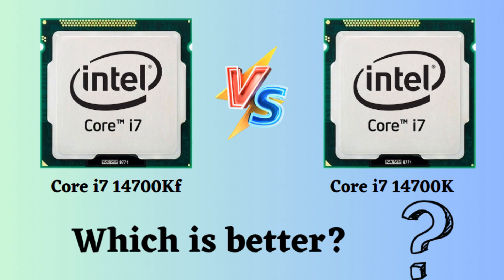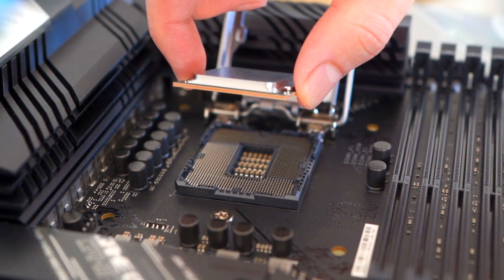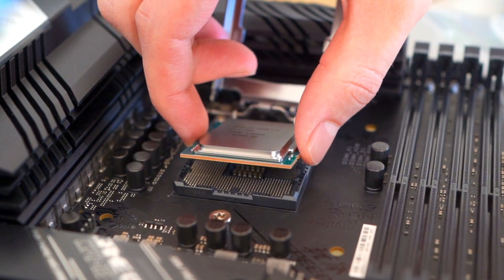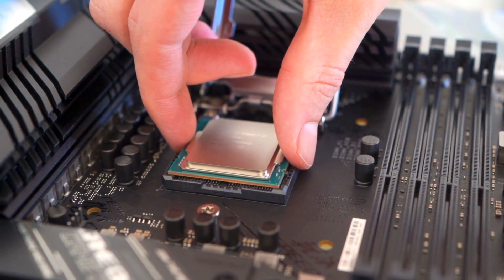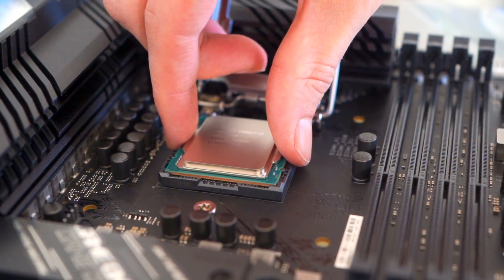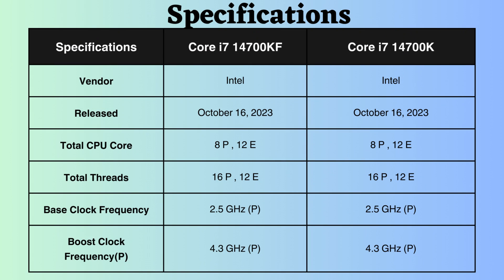In this video, I will compare the Intel Core i7-14700KF and Intel Core i7-14700K, highlighting their differences, and then provide a conclusion to help you determine which one is the better choice. Both processors come with the same core architecture and clock speeds but have slight variations in features. At last, I will provide my suggestion on which processor to choose.